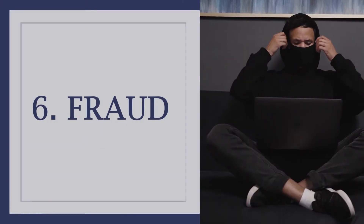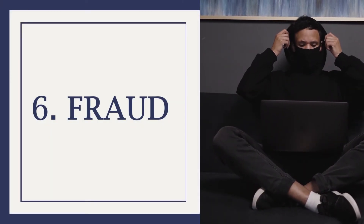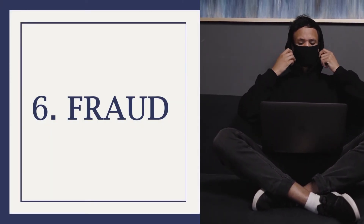Fifth, malfeasance. This means the trustee has acted in bad faith or done something that is purposely injurious to the beneficiary. An example of malfeasance could be a trustee who donates in a beneficiary's name to a political organization that they oppose. Yes, we've seen this happen in real life.